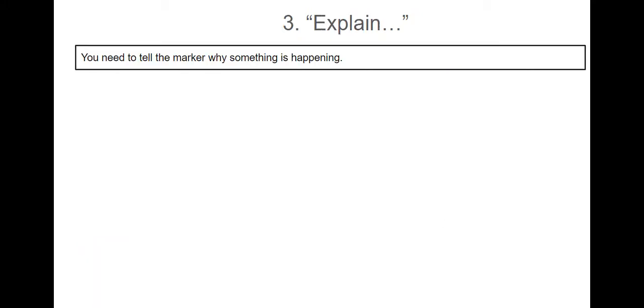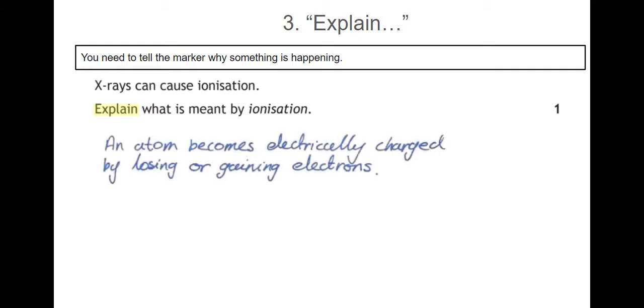Number three, explain. In an explain question you need to tell a marker why something's happening. For example, x-rays can cause ionization. Explain what is meant by ionization. So I would say an atom becomes electrically charged by losing or gaining electrons.